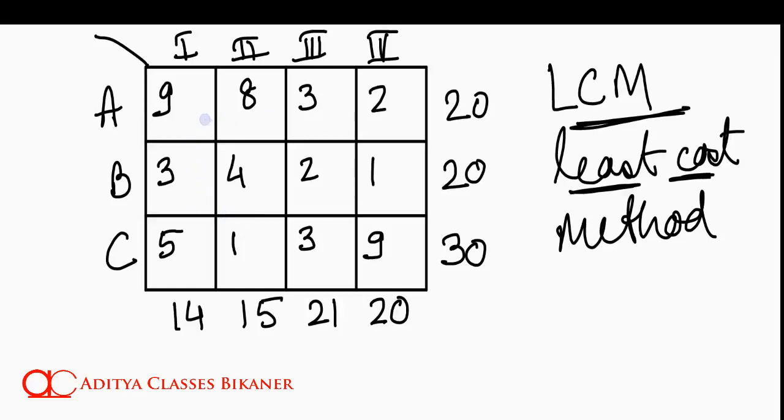Least Cost Method suggests that the cell with least cost is the best cell. Can we see Least Cost? 9, 8, 3, 2, 3, 4, 2. Yes. This is a Least Cost cell. Then this is another Least Cost cell. These 2 cells are such that they can transport your units for minimum expenditure of 1 rupee per unit. So, these 2 cells are the best cells. Now, the problem is there are 2 cells. Which one do I select?